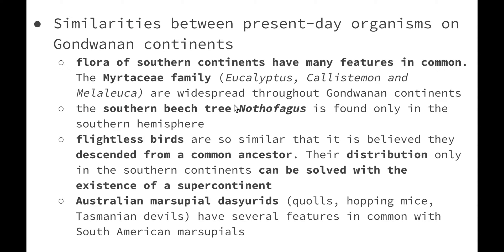The next piece of evidence is the similarities between present-day organisms on Gondwana continents. The flora of southern continents — South America, South Africa, Australia and New Zealand — share many features in common. For example, the Myrtaceae family including Eucalyptus, Callistemon and Melaleuca are widespread throughout Australia with 50 genera, throughout South America with 27 genera, and in Southern Asia. The family Proteaceae, which includes Banksia, Grevillea and Telopea, are found in New Zealand, South and Central America, Africa, India, Southeast Asia, Oceania and Australia, but not anywhere in the Northern Hemisphere.